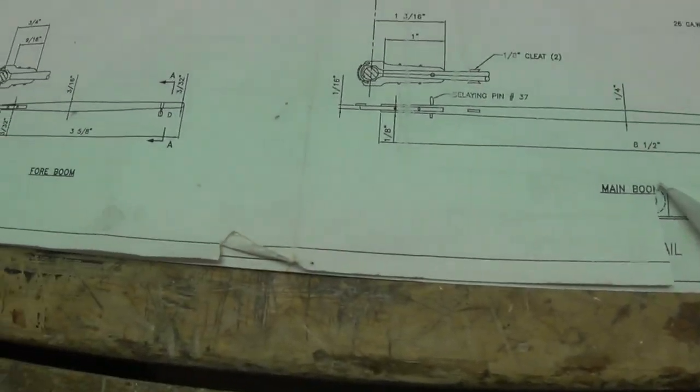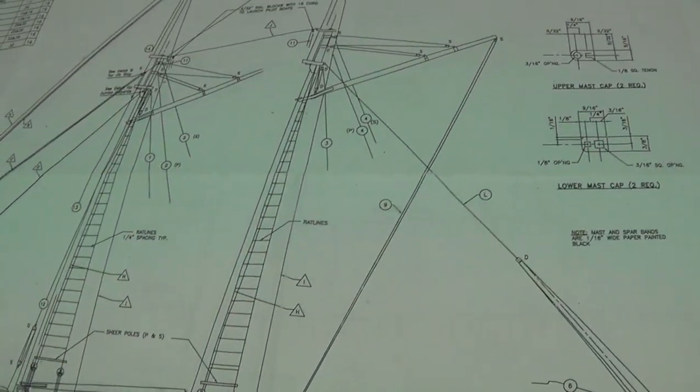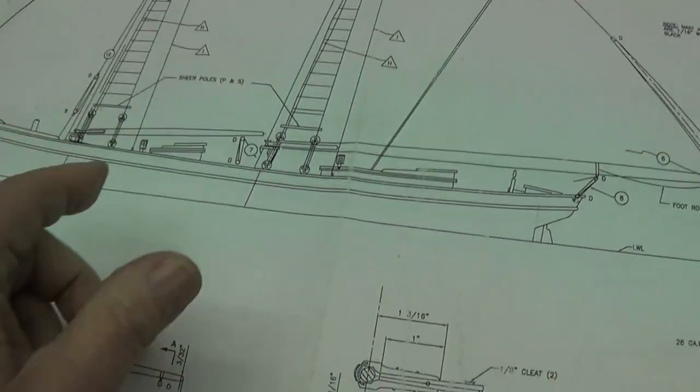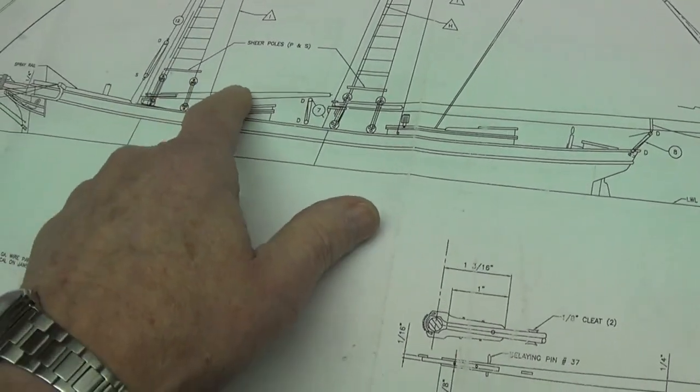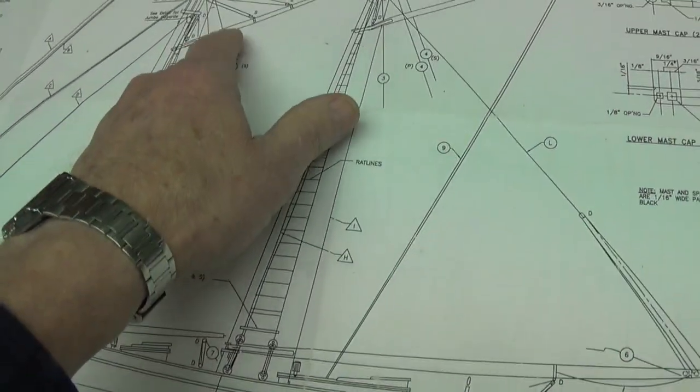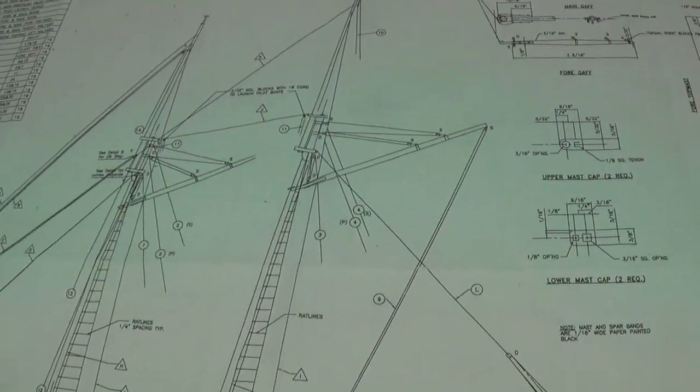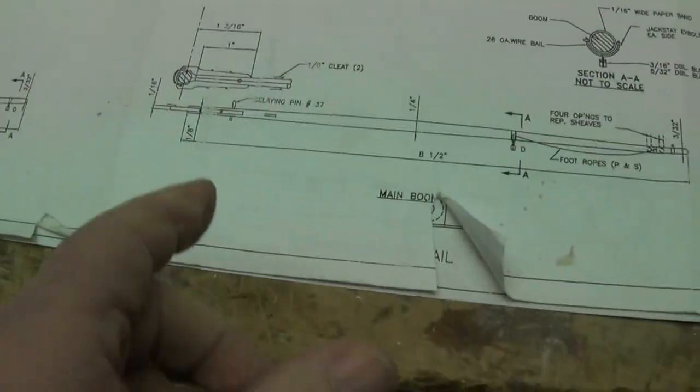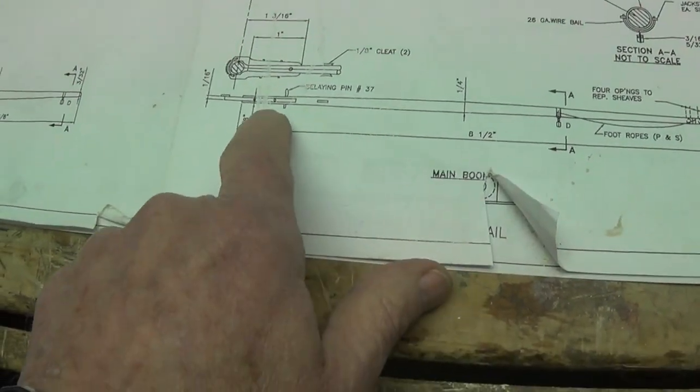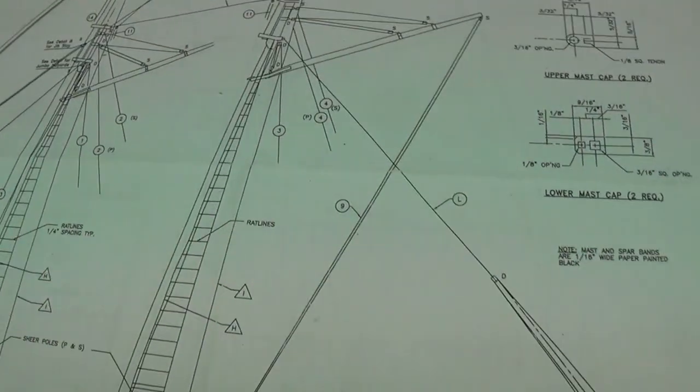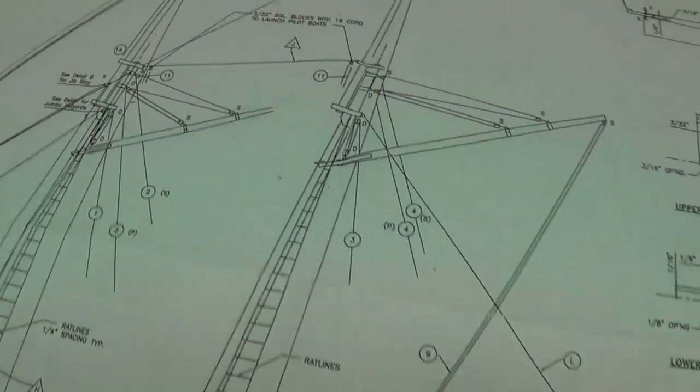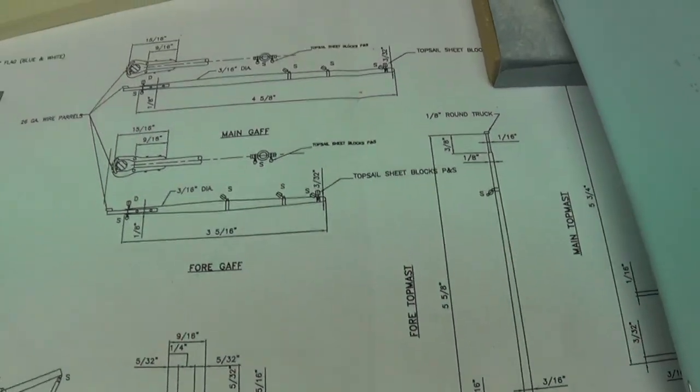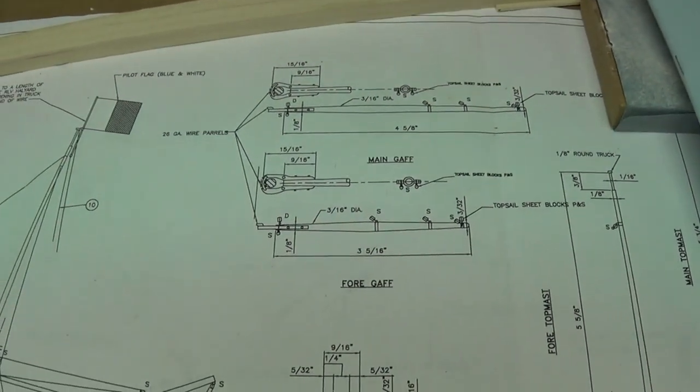We're going to be working on the yards next. We've got the main boom and the foreboom, then we've got the gaffs. So basically four pieces of dowel that need to be tapered. And then we need to fabricate yokes to go on the ends of those so that they can attach to the mast, and there's some iron bands and things that need to be put on them. That's what we'll work on next.